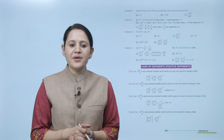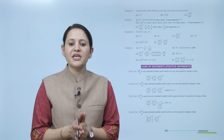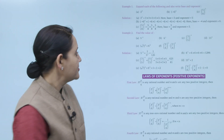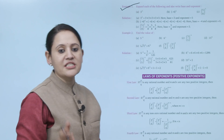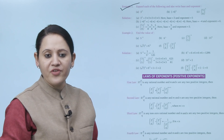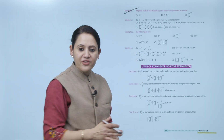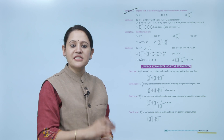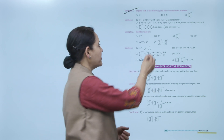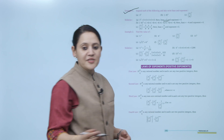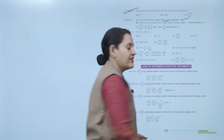Now let's take an example: expand each of the following and also write the base and exponent. First: 3 to the power 5. Solution — 3 to the power 5 means 3 multiplied by itself 5 times. Here base is 3 and exponent or power is 5.